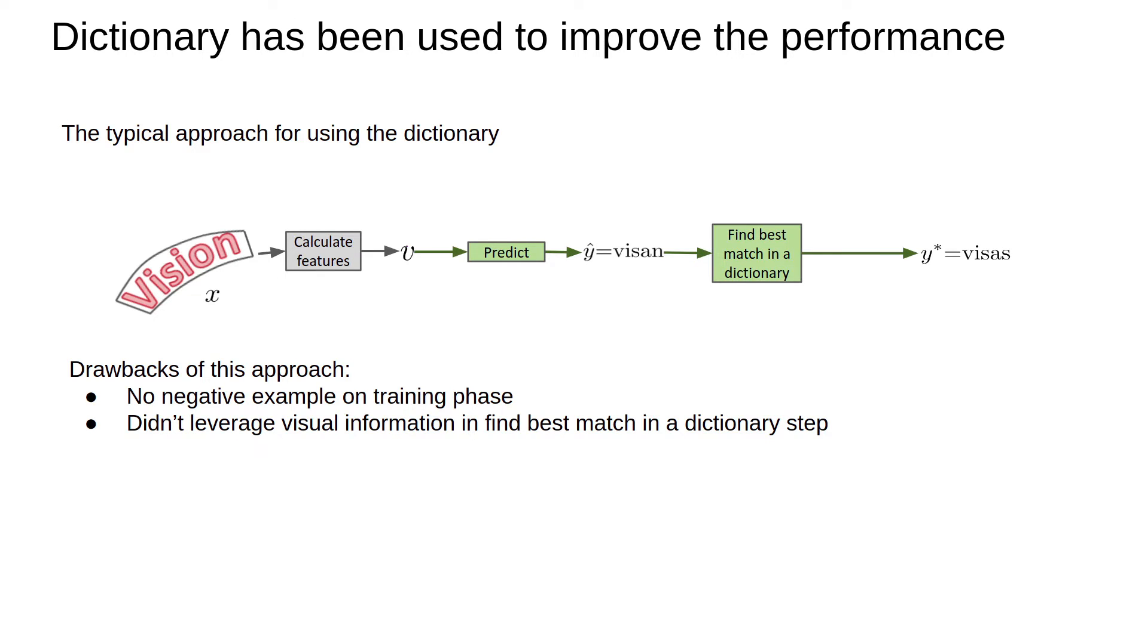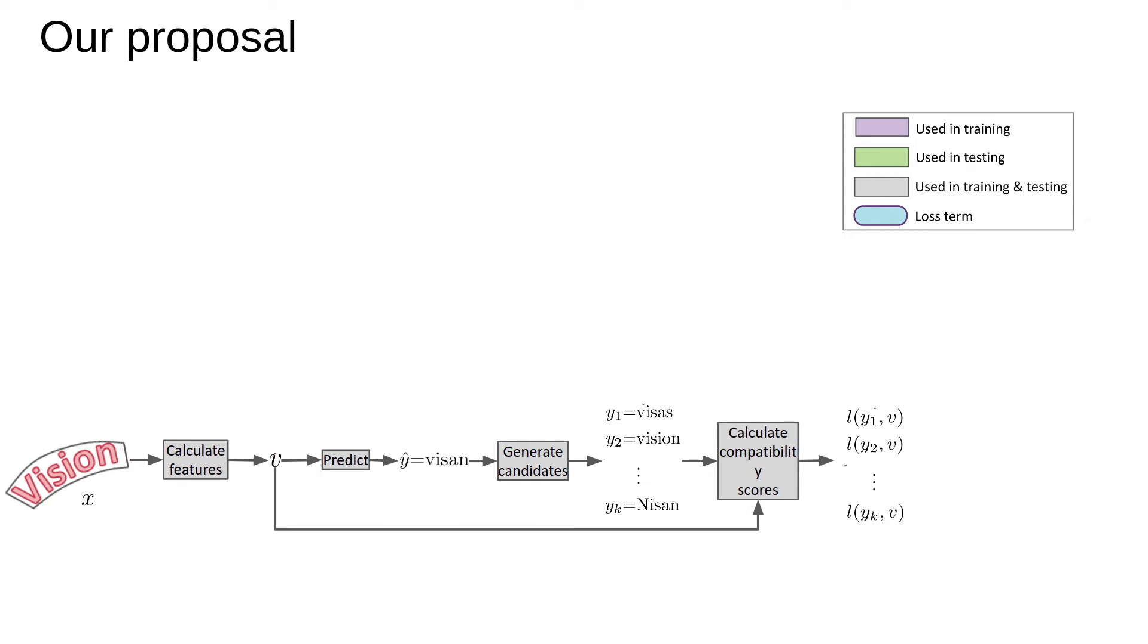Our proposal tries to solve two problems above. In the testing phase, we use produced raw output in the same way with the traditional approach. After that, we generate a list of candidates that have the smallest Levenshtein distance with raw output. Then, we calculate the loss between feature map V and each candidate. The final output is the candidate which has the smallest loss with V.